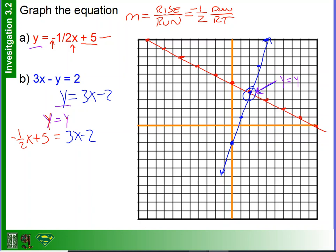Alright, well, this is just another train track problem, isn't it? Okay, so, well, let's move this 5, right? So, oh, no, better yet, let's move this 2. So, let's add 2, add 2. So, I get negative one-half x plus 7 is equal to 3x.